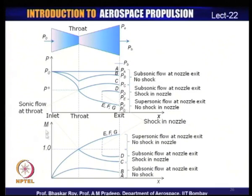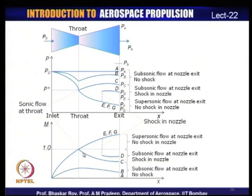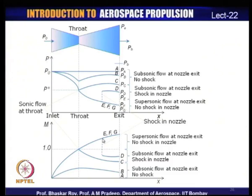Looking at the Mach number plot: for state A, no flow; for state B, Mach number increases and then decreases in the diverging section; for state C, it reaches M = 1 at the throat (critical condition) but decelerates back to subsonic — subsonic flow all the way through. At state D, flow is supersonic after the throat, then a shock causes deceleration back to subsonic, and we still have subsonic flow at the nozzle exit.